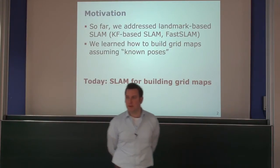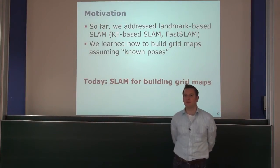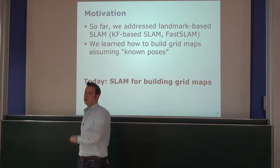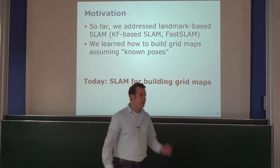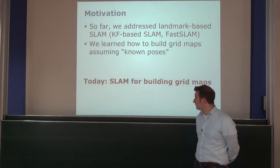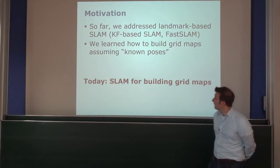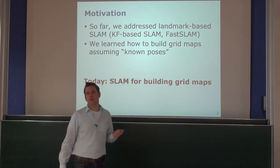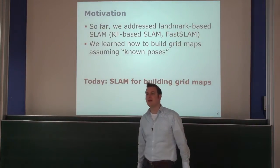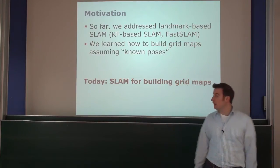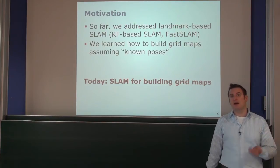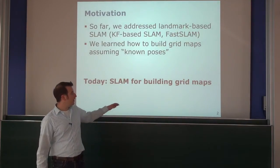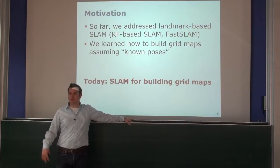Every sample or particle carried its own map, giving us a joint belief about the trajectory the robot took and the map of the environment. We did that for landmark-based SLAM by exploiting two facts: first, that we can track a low-dimensional space efficiently with a particle filter; and second, that once we know the poses, mapping is easy. Today I would like to look at how we can do that for building grid maps — building a dense grid map separating space into occupied and not occupied cells.